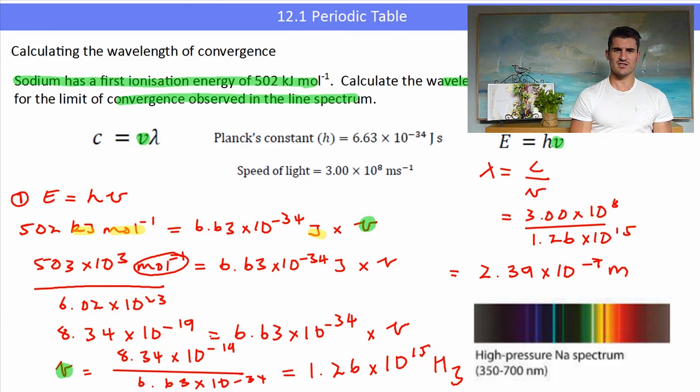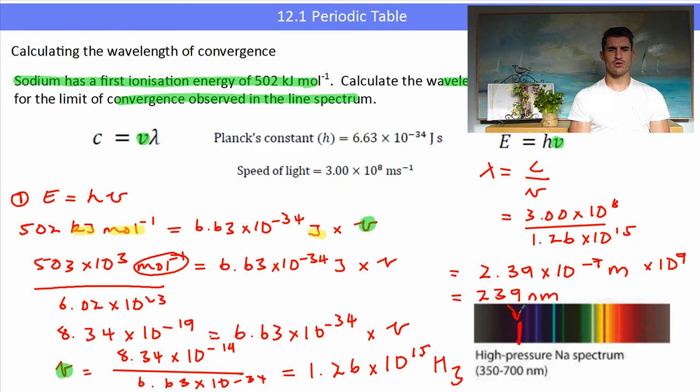Now the question asked for the wavelength in nanometres. Now nano means times 10 to the minus 9. So what I have to do here is multiply this by 10 to the 9. And that will give me my unit in nanometres. So that is 239 nanometres, which is somewhere just in the ultraviolet section of the spectrum. That is where the lines in the sodium spectrum will converge.